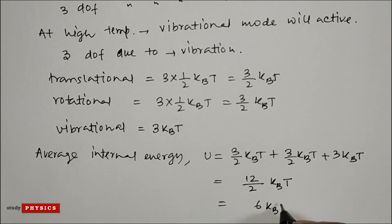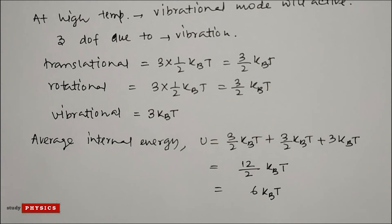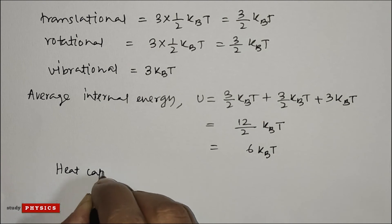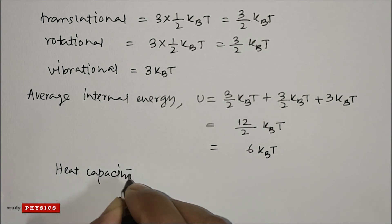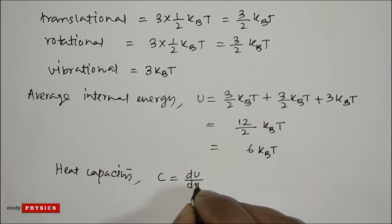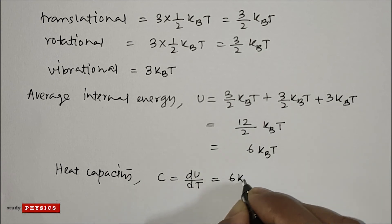And they have asked for heat capacity. So we know heat capacity C equals dU/dT, which is 6 k_B.